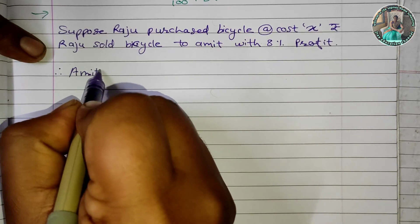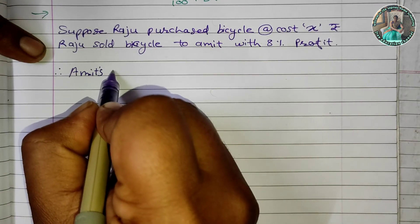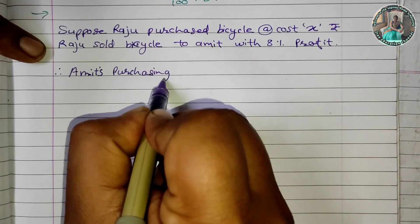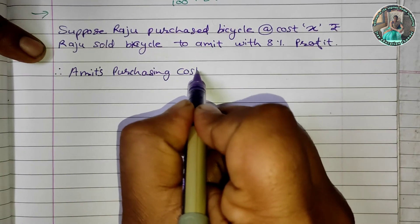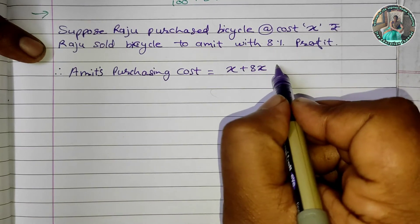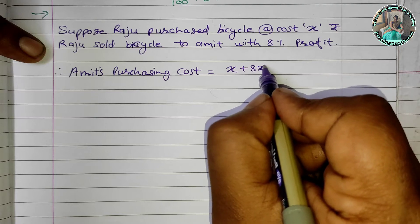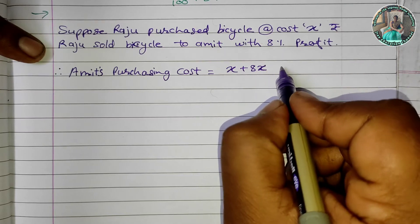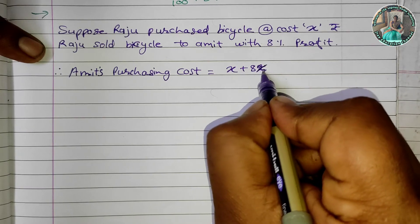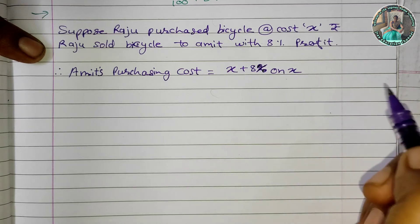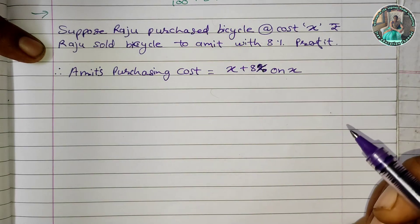Amit's purchasing cost is equal to x plus 8% on x, which means x plus 8x upon 100.